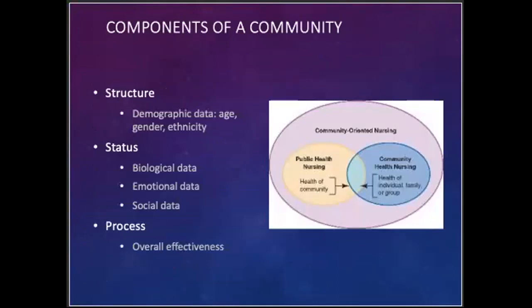Our components of our community — we have structure. Structure refers to the general characteristics of community. These include demographic data such as gender, age, ethnicity, education, and income levels, as well as data about health services, such as number of primary care providers or emergency departments in the area. Our status describes the biological, emotional, and social outcome components of a community. Biological data includes morbidity, which is illness, and mortality, which is death rates, life expectancy ratios, and risk factor profiles for respective age groups within a community.